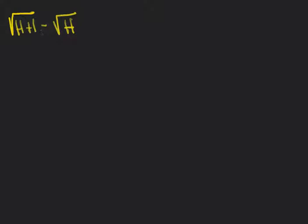We're subtracting two infinite numbers, so we're not sure of the result. If this were addition, it would be easy — two positive infinite numbers added together give another positive infinite number. But the problem here is the subtraction.